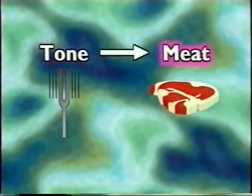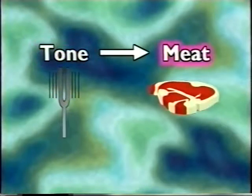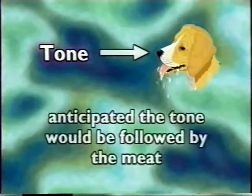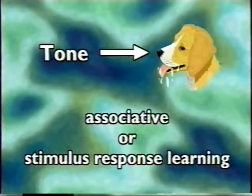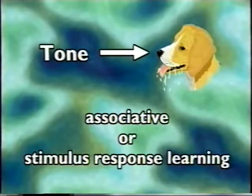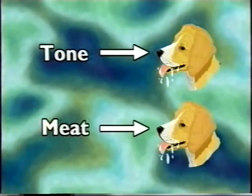Pavlov sounded a tone just before he put meat into the dog's mouths. At first, the tone by itself didn't get the dogs to salivate, but after a few times of pairing the tone with the meat, the dogs started to salivate when they heard the tone, because they anticipated that the tone would be followed by meat. This is a classic case of associative, or stimulus-response learning. The dogs learned to associate the tone with the meat, so either the tone or the meat could make them drool.